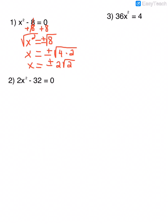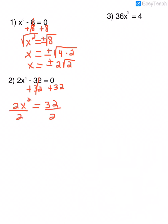For number two, only the x is being squared, not the 2. So we need to get x squared by itself. First, add 32 to both sides to get 2x squared equals 32. Then divide by 2 to get x squared equals 16. Now that the thing being squared is by itself, take the square root of both sides: x equals plus or minus the square root of 16, which gives x equals plus or minus 4.